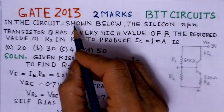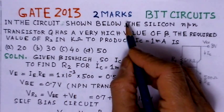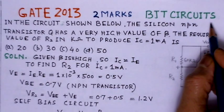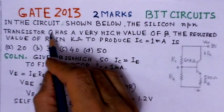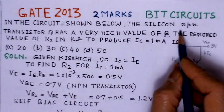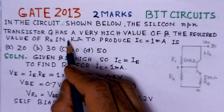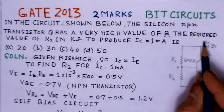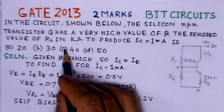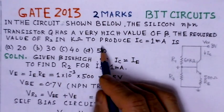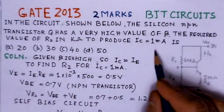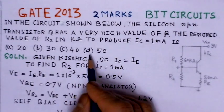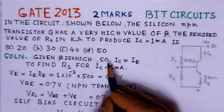This problem is of GATE 2013, of 2 marks, and it is on BJT circuits. The problem is: in the circuit shown below, the silicon NPN transistor Q has very high value of beta. The required value of R2 in kilohms to produce IC of 1 milliampere is - there are 4 options given here and we have to see which is the right option.